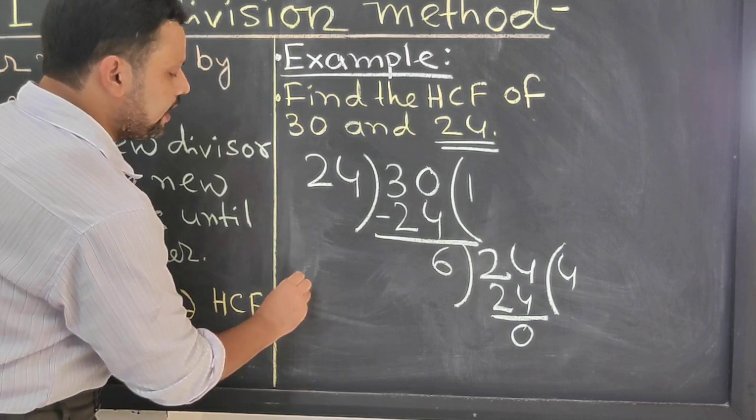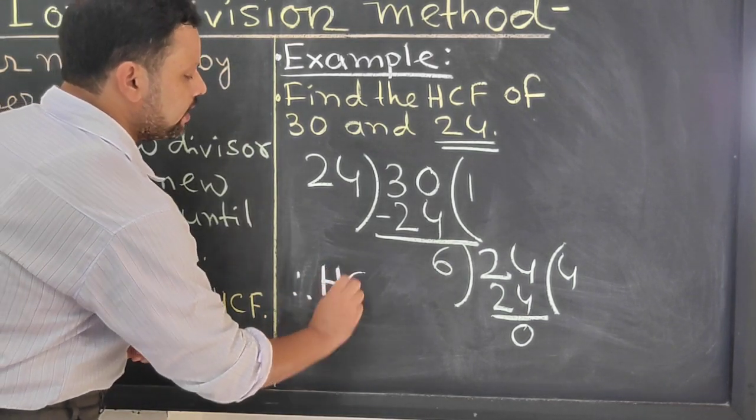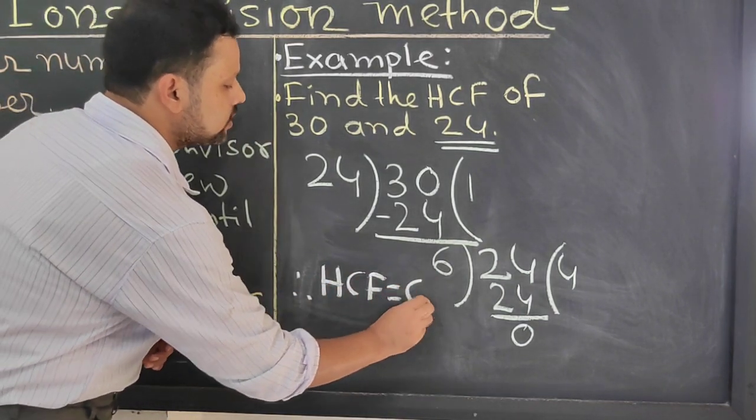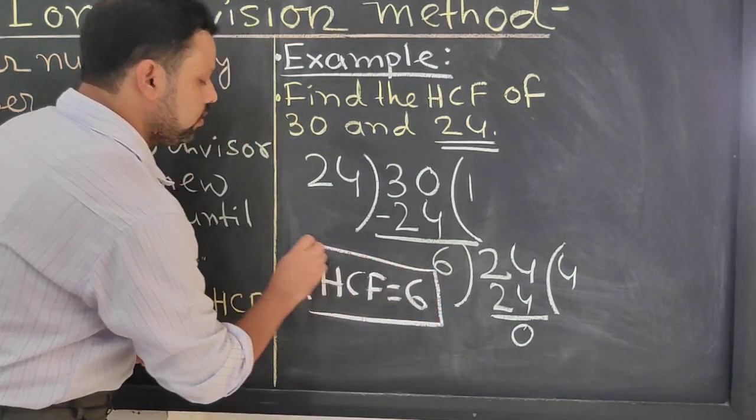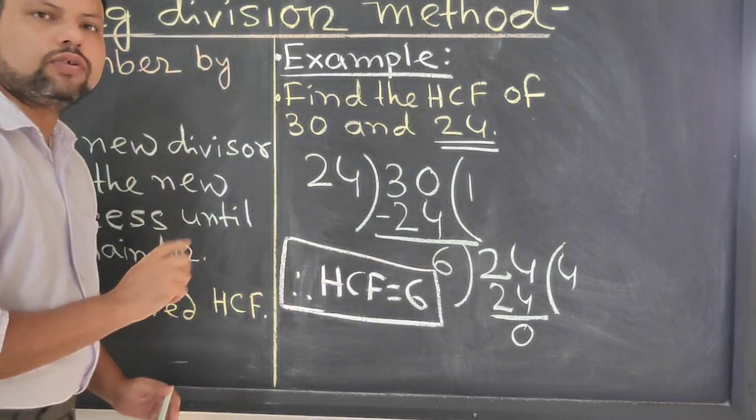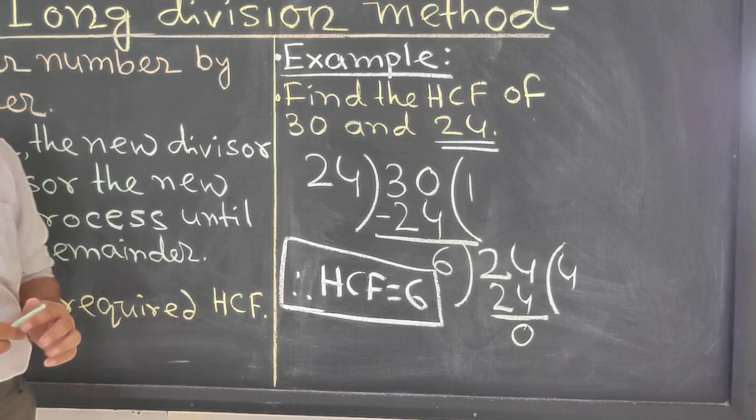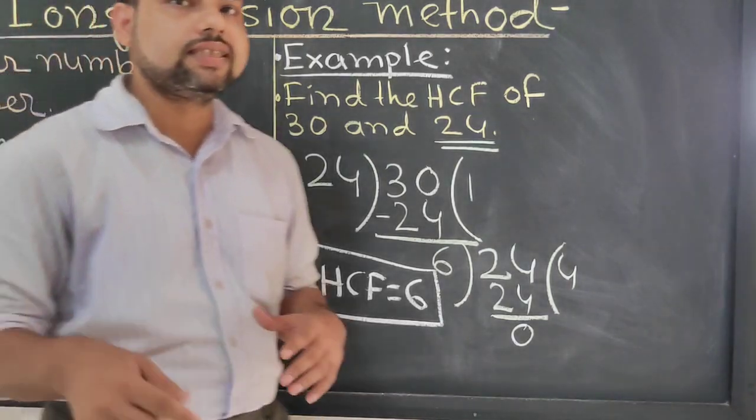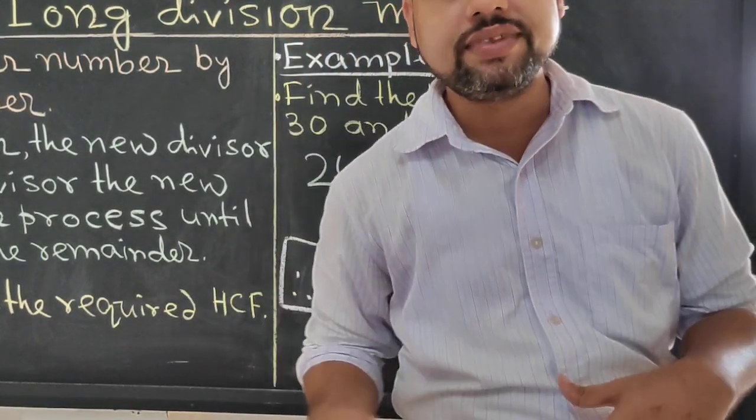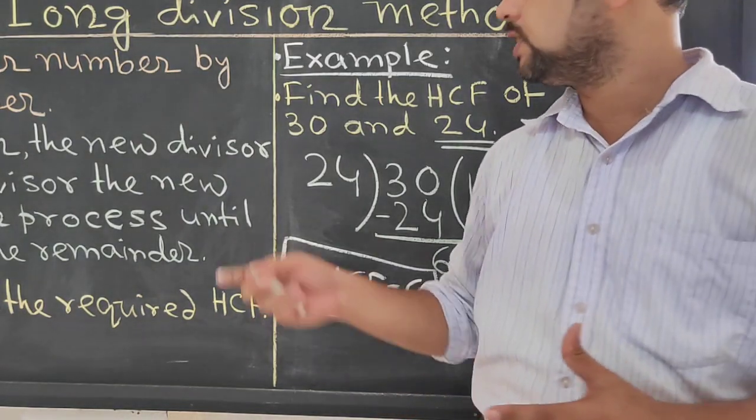So therefore, I can write, therefore HCF equals to 6. Take one. Now I will explain if 3 numbers there, then how to find this. Students, please follow this step.